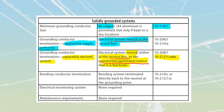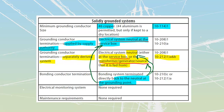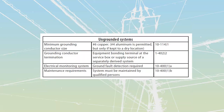Bonding conductor termination has to be directly back to the neutral at the grounding point. So if it's on my own system, I'm going to tie back either to the source or to the service box, whichever one I have grounded the system at. If it's going to be on a hydro-supplied one, it's going to be at the neutral in the service box. We don't have any requirements for electrical monitoring systems and we don't have any requirements for maintenance for solidly grounded systems.